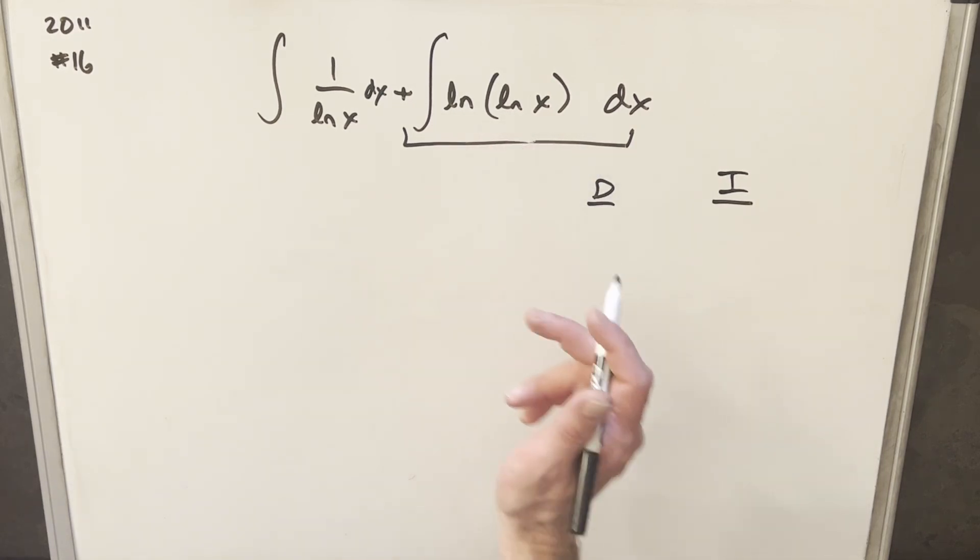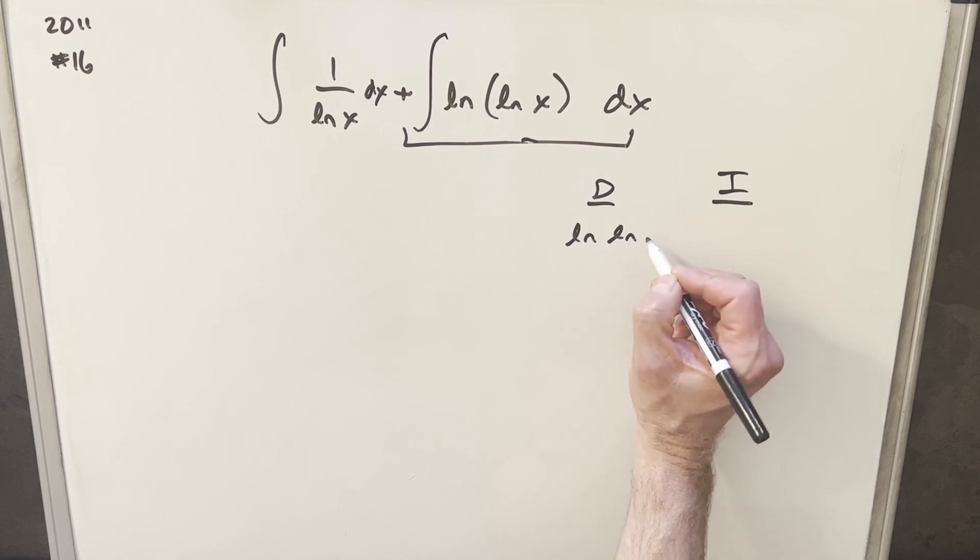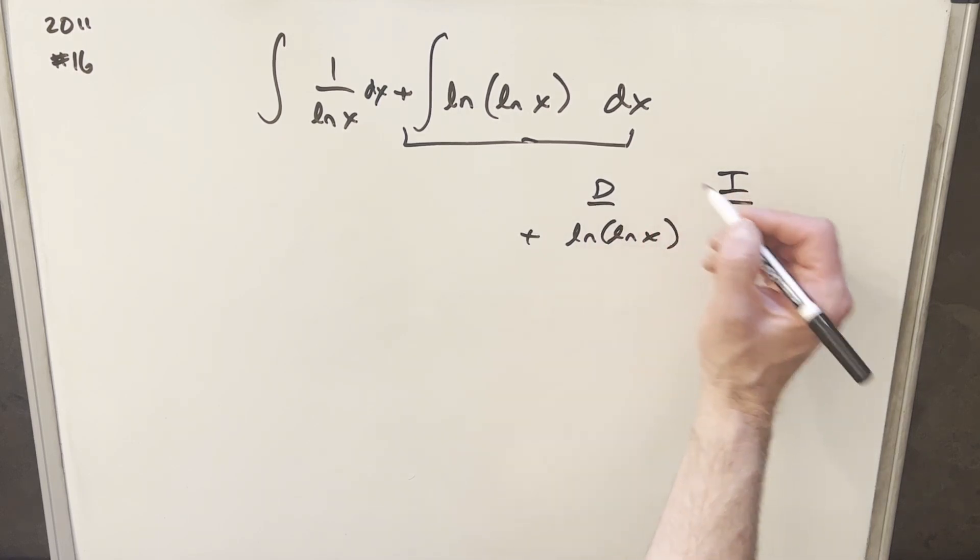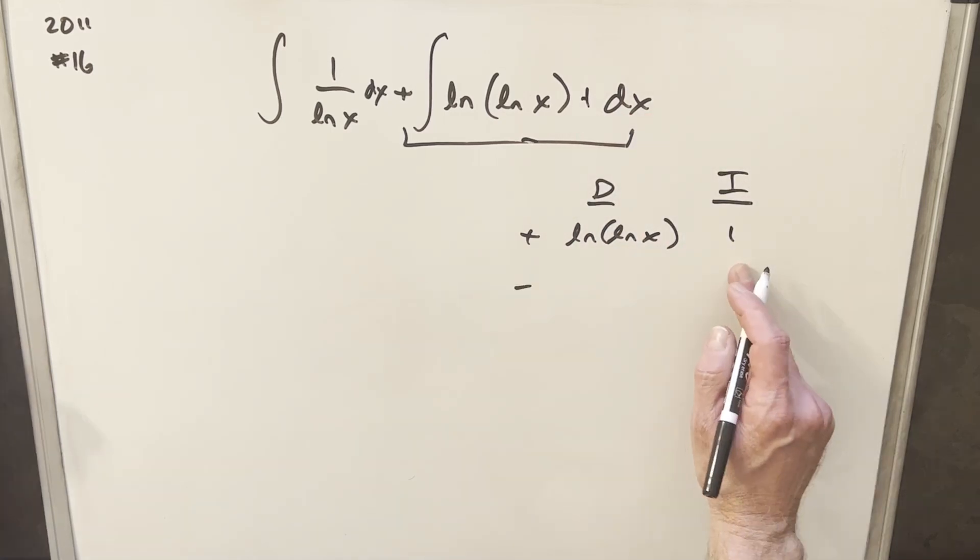Clearly, it'd be difficult to integrate this thing, but what we can do is differentiate it, so we'll use that as our function to differentiate, and we'll just integrate a little 1 right here. Integral of 1 is going to be x, so that's easy enough.